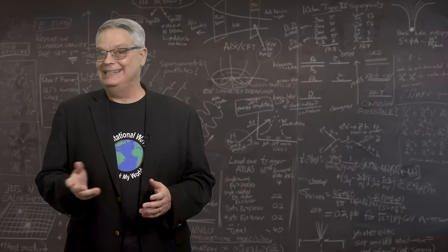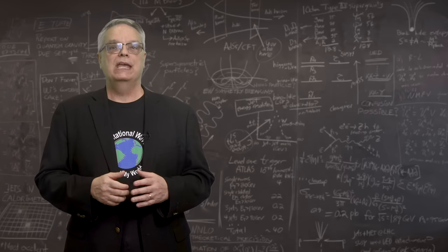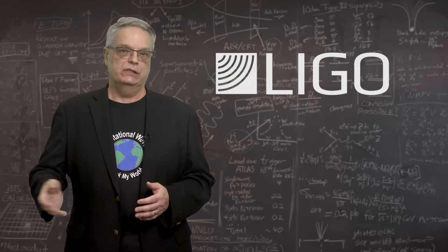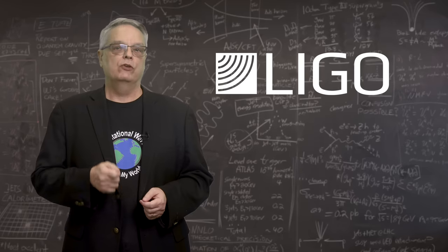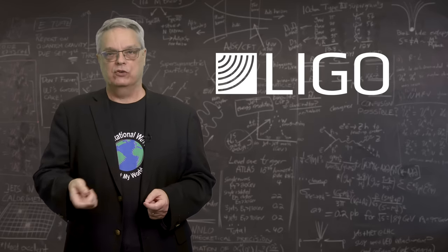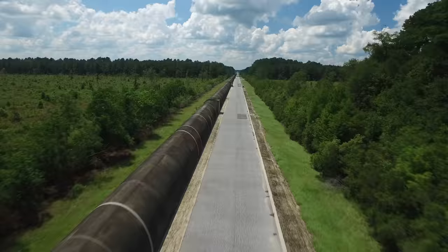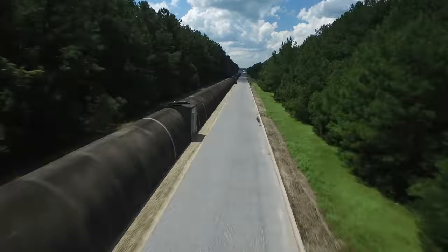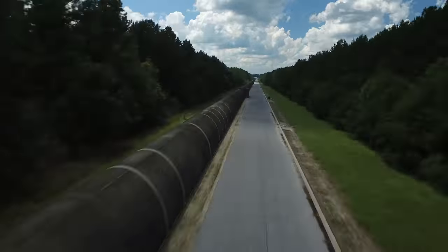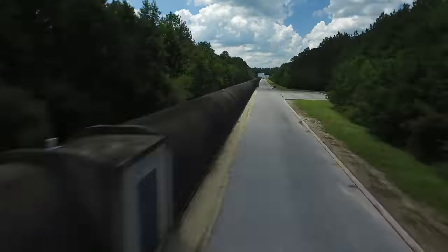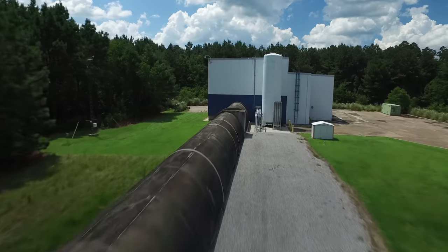So, back in the 1990s, researchers began building what are called the LIGO facilities. LIGO is short for Laser Interferometer Gravitational Wave Observatory. Each facility consists of two hollow tubes. Each tube is four kilometers or two and a half miles long. The two tubes are oriented in the shape of an L.